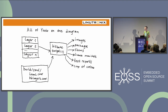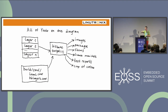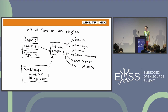BitBake itself doesn't actually know anything about embedded Linux or building software. It's a task processor. It builds up a graph of tasks with dependencies between them, then works its way through the graph until it reaches the destination or finds an error. The tasks are Python or shell scripts that BitBake runs. What defines the content of the tasks? Those come from things called layers. Layers have stuff, stuff defines tasks, and BitBake runs them.